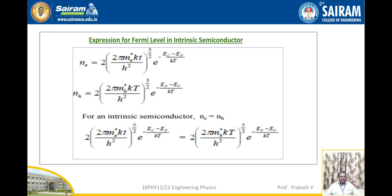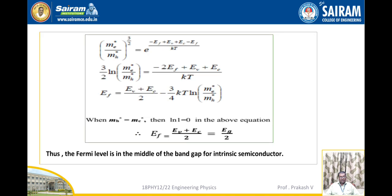After simplifications, we get E_F equal to (E_V + E_C)/2, which equals E_G/2, where E_G is the energy gap. So E_F equal to E_G/2. Thus, the Fermi energy level is in the middle of the band gap of an intrinsic semiconductor. That is the inference: E_F equal to E_G/2 in case of intrinsic semiconductor.